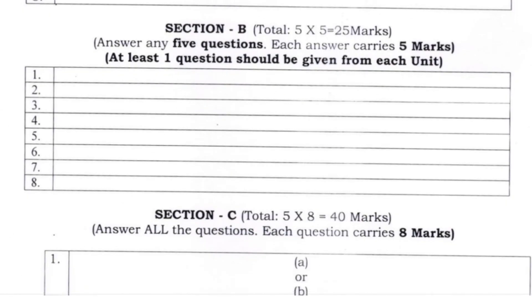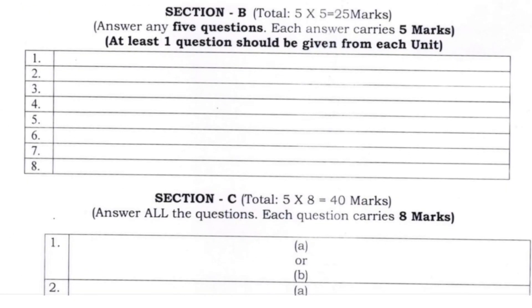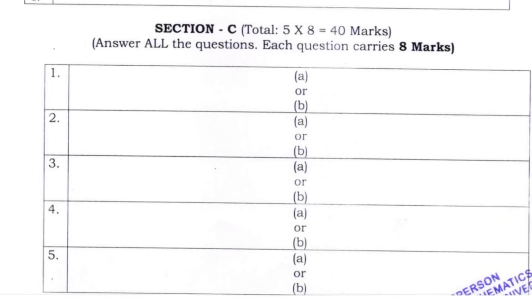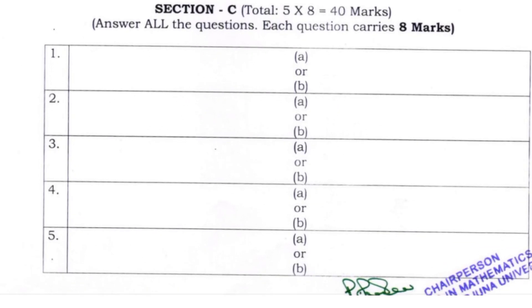The question pattern is the same. Section A has very short answers: 5 questions for 5 marks. Section B carries 5 for 8 marks. Section C has 5 questions.